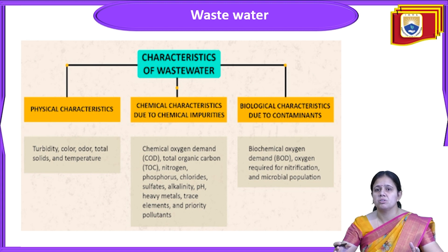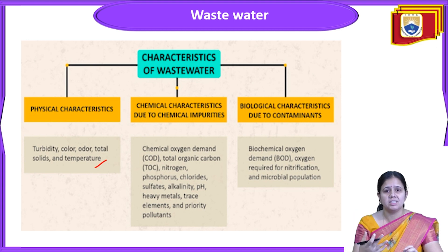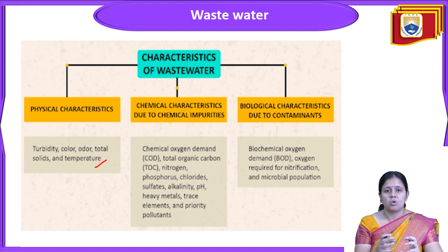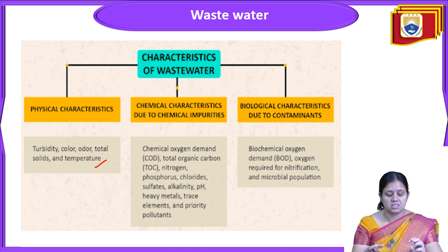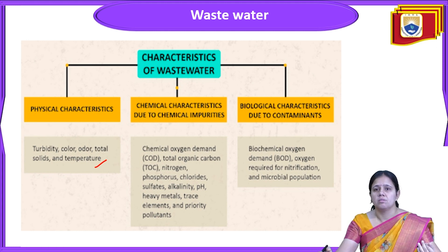For physical characteristics of wastewater, these include turbidity, color, odor, total solids, and temperature — all the physical appearance of the water. Physical appearance means by looking at the water we can see it is polluted. Turbidity means the water looks very dark in color. Other physical indicators include color, odor, taste of the water, and total solids — all information obtained just from the physical appearance of the water.